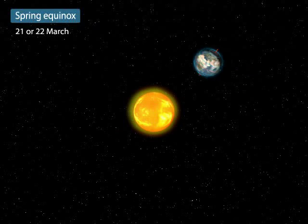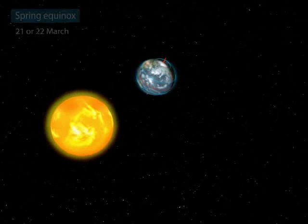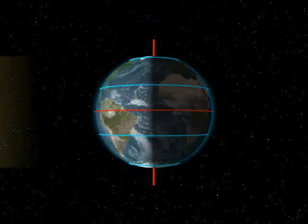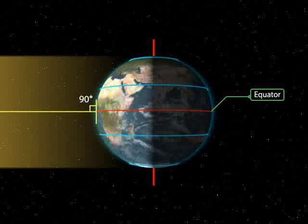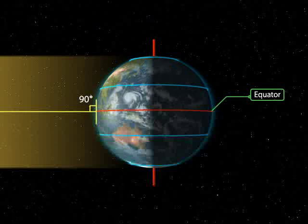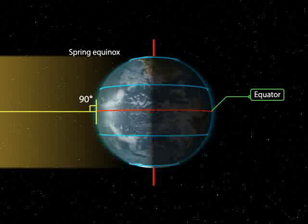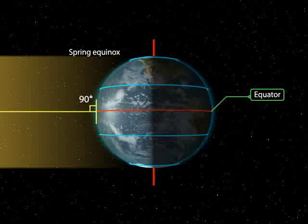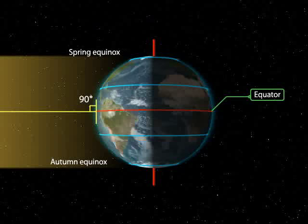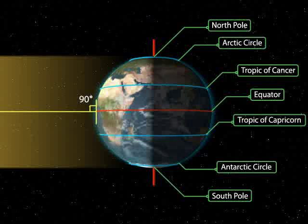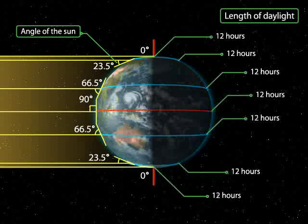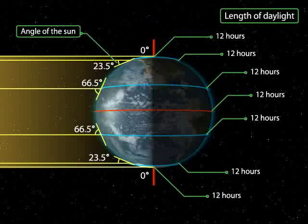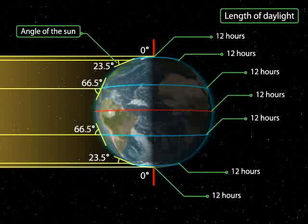Spring equinox: On the 21st or 22nd of March, the overhead Sun is over the equator. The equator receives the largest amount of solar radiation. At this time, the northern hemisphere is in the spring equinox, while the southern hemisphere is in the autumn equinox. The angle of the Sun decreases towards the poles. On this day, the two hemispheres receive a similar amount of solar radiation, and the length of day and night is the same at all places on the Earth.